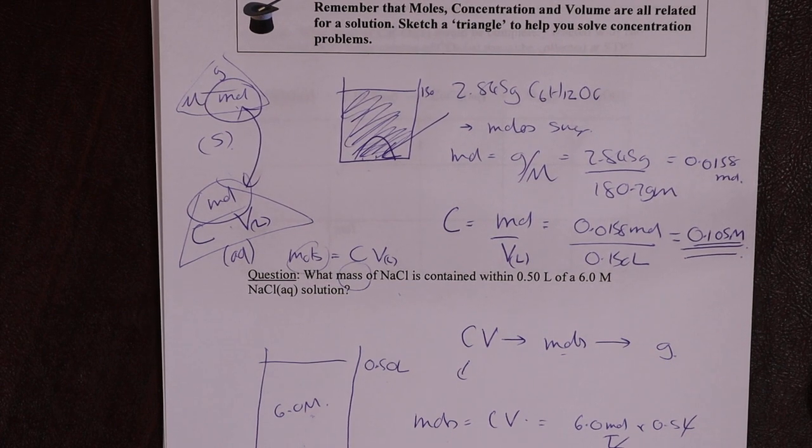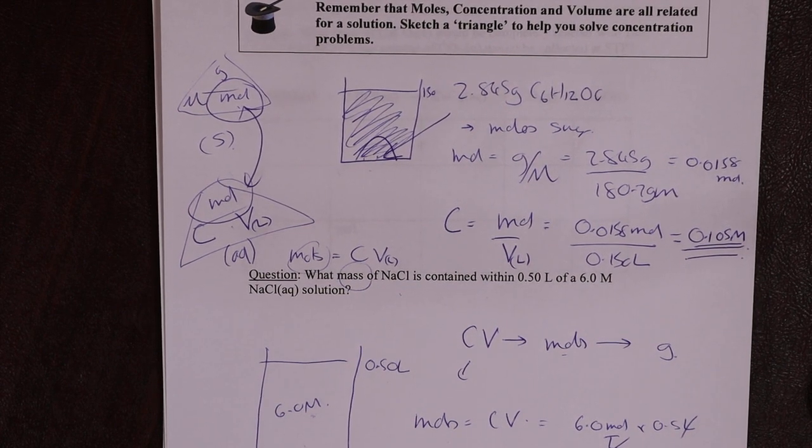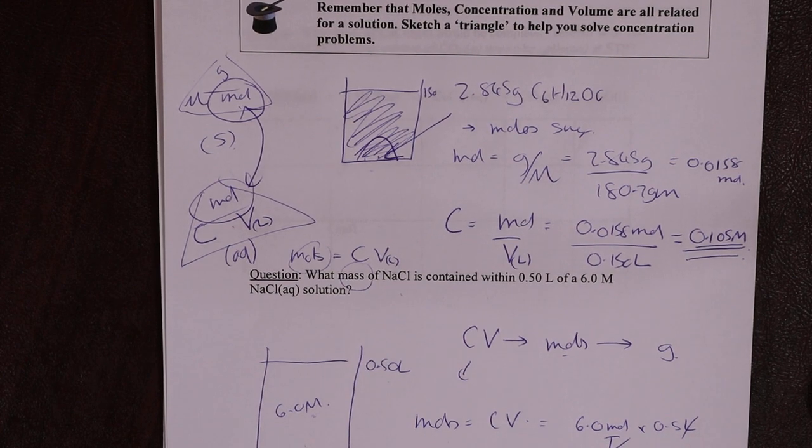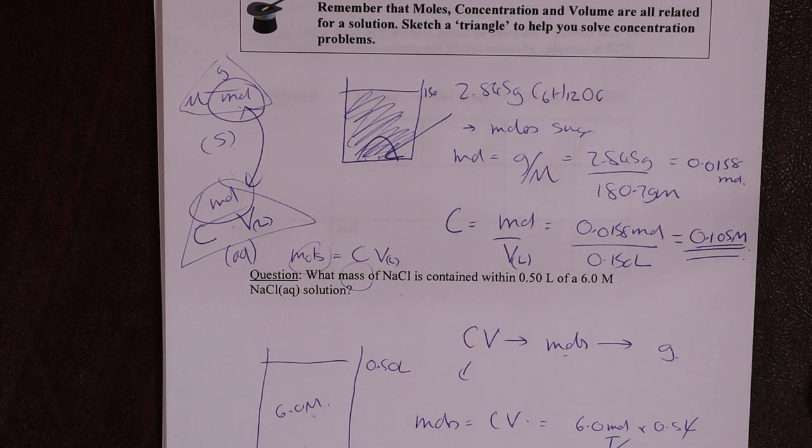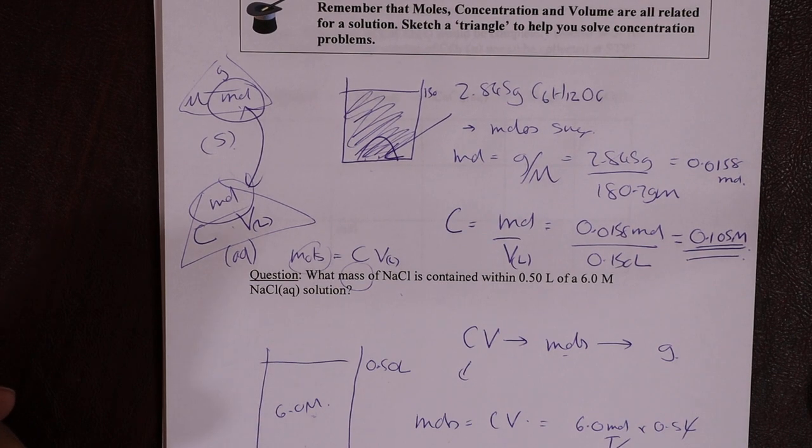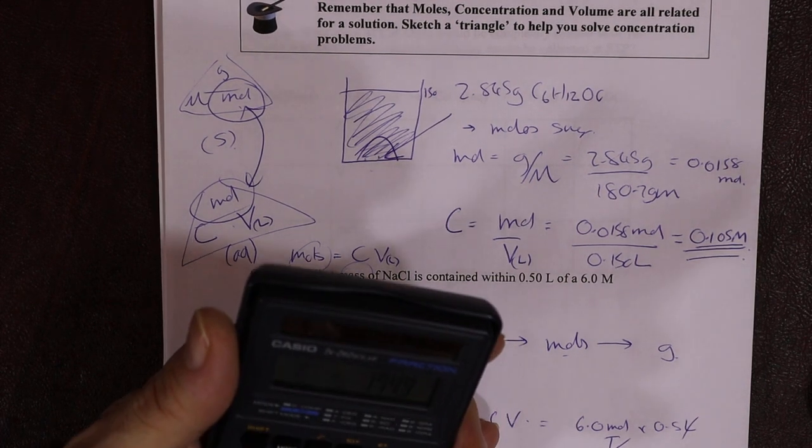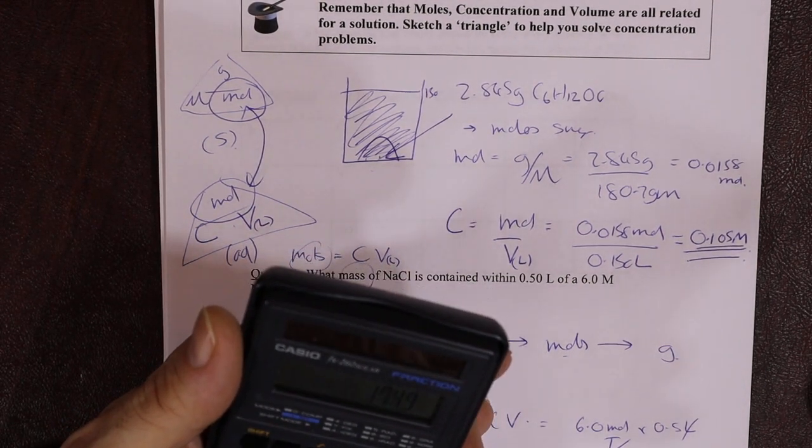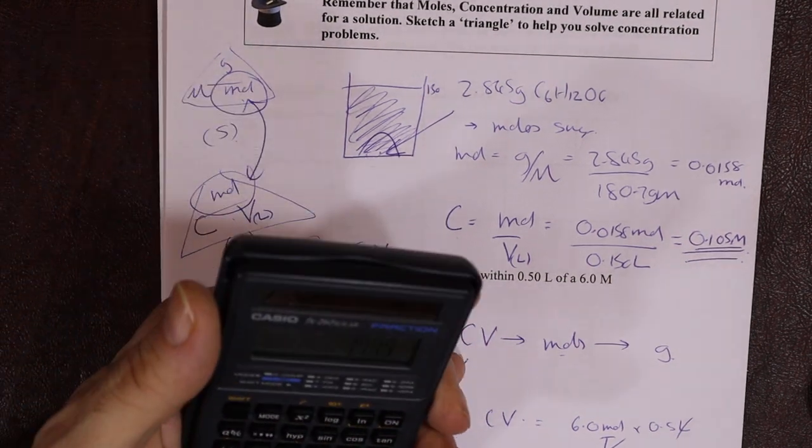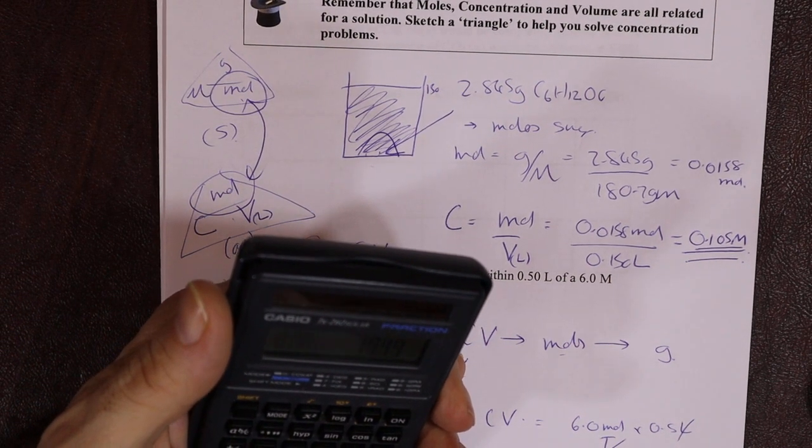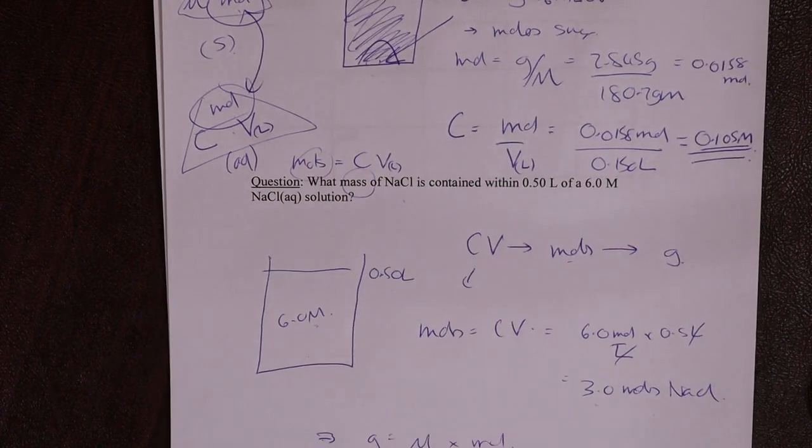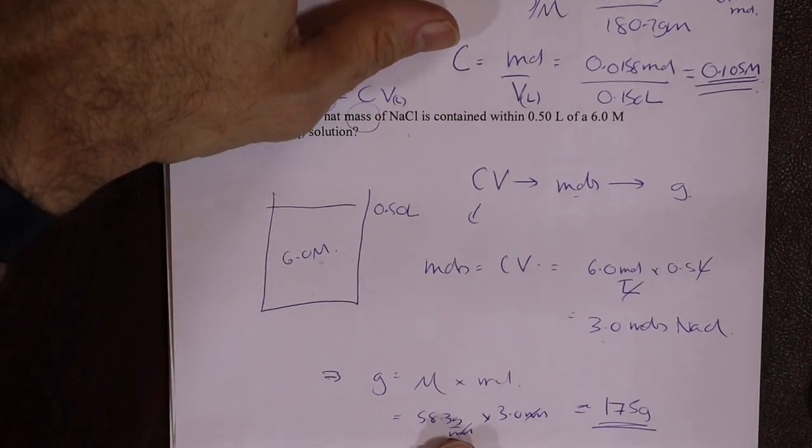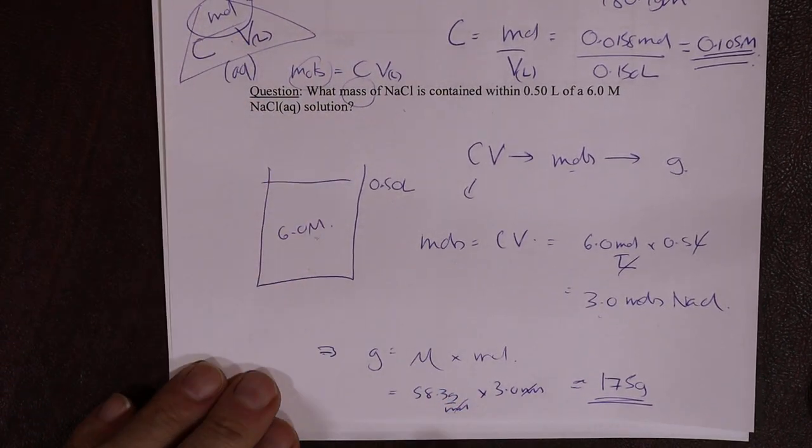58.3 grams per mole times 3.0 moles equals, hopefully you got the same answer I did, let's just do it together, 58.3 times 3 equals 174.9, three sig figs, 175 grams, approximately. Okay, so there it is. Oh, move it up so you can see it. I apologize, I did that again.